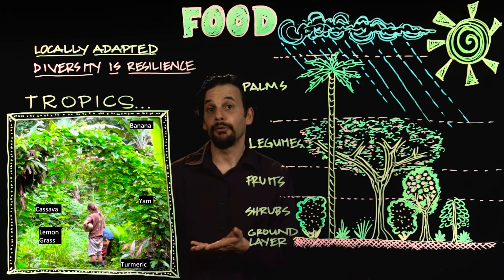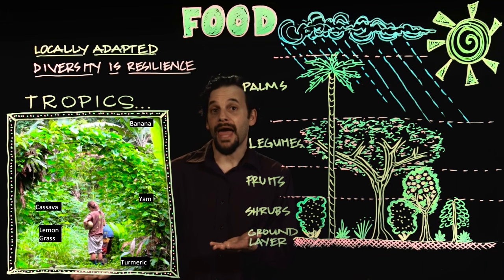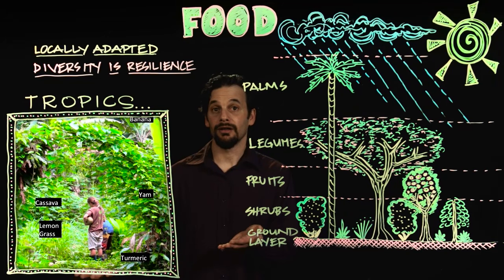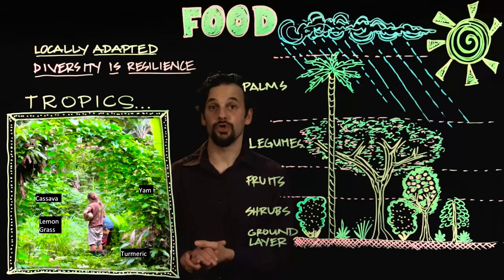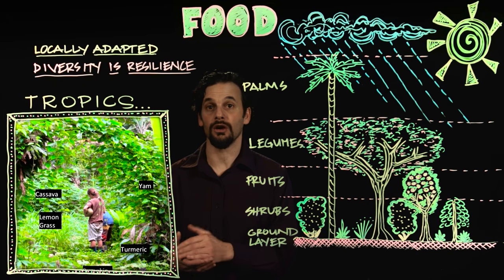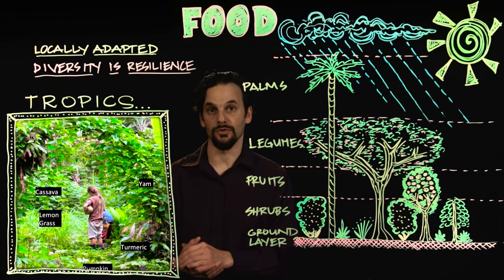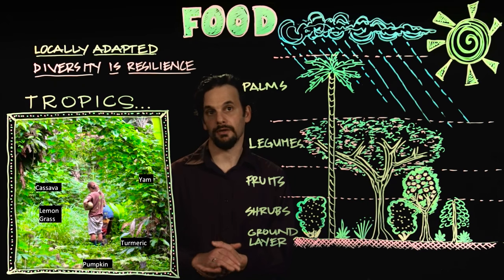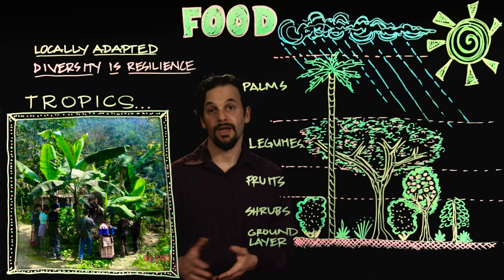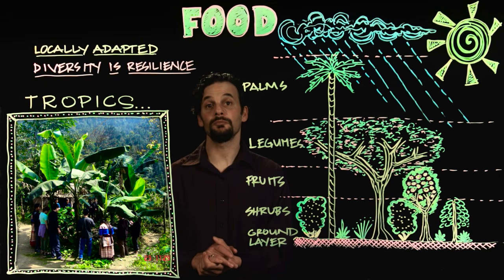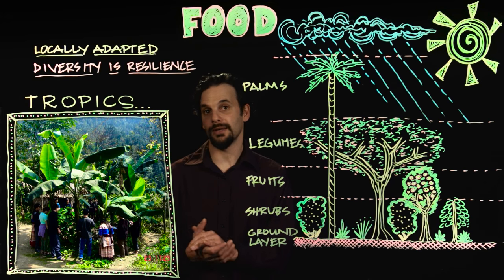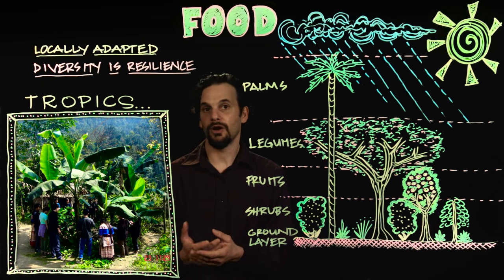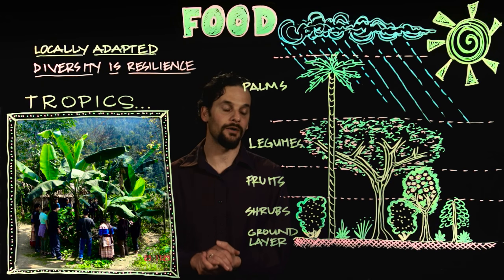Here we see bamboo, banana, yam, cassava, lemongrass, pumpkin, and turmeric in a multi-story jungle of edible and useful species in Costa Rica. And here we see a circle of banana trees in Vietnam surrounded by perennial staple crops like sweet potato, cocoa yams, and lemongrass as well.